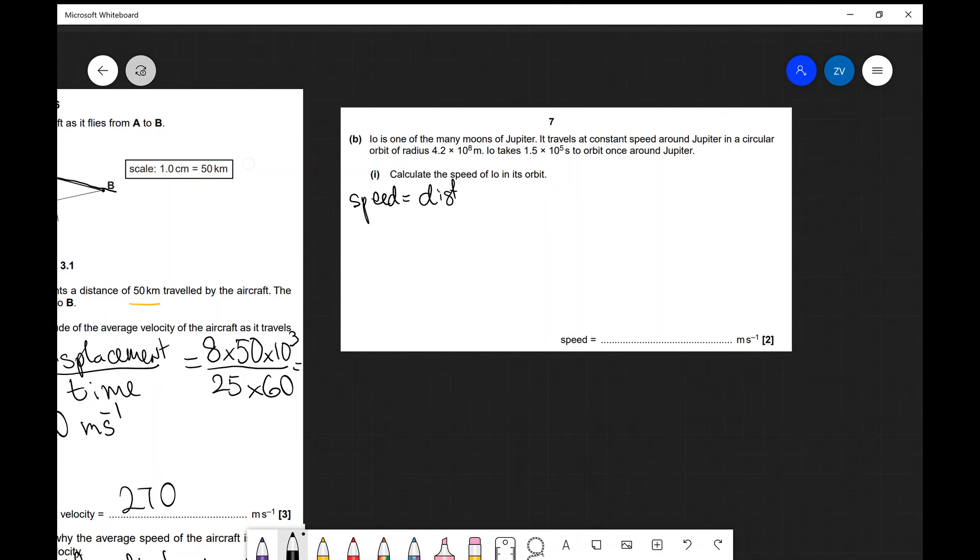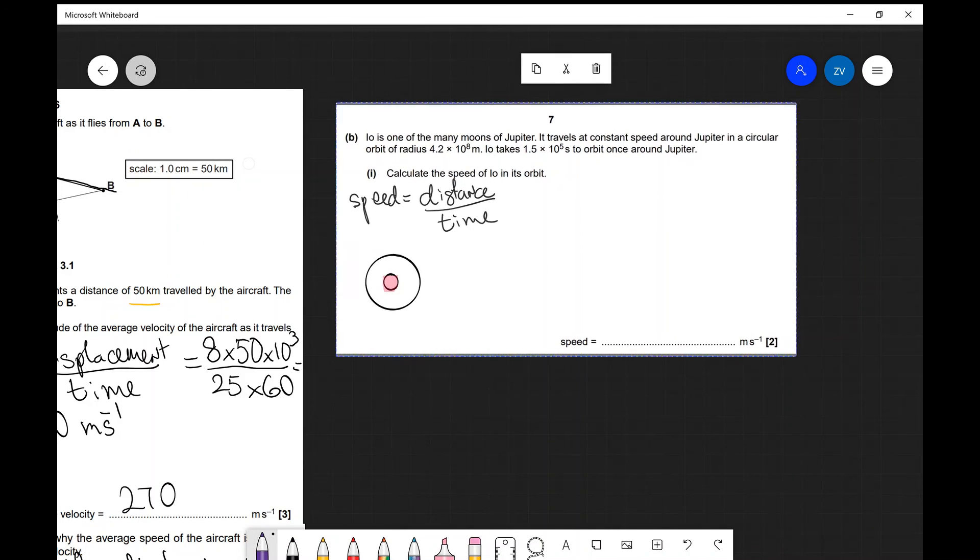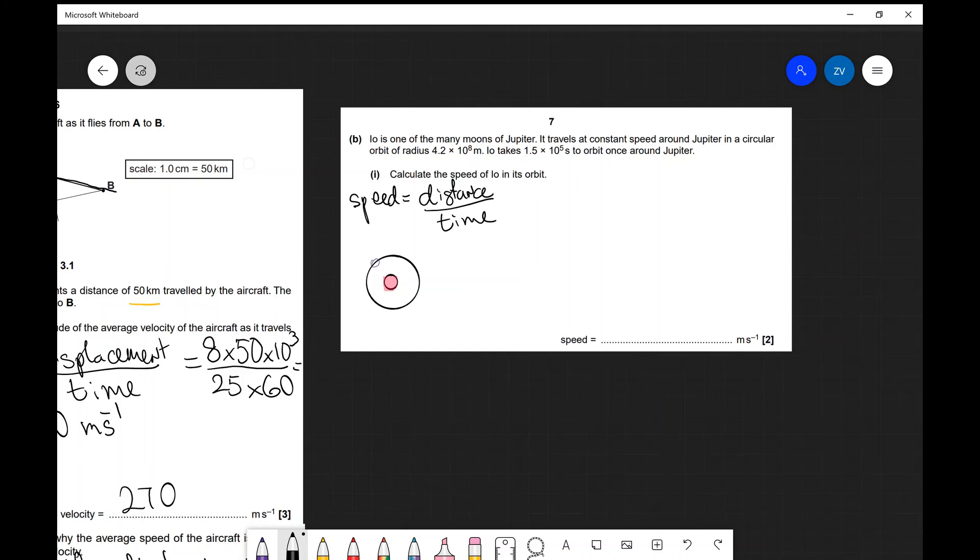Now the speed is—so speed will be the distance traveled divided by the time. Now because Io is moving in a circle around Jupiter so let's say that this is Jupiter in the middle over here and we have Io orbiting around here the radius of this circle is r which means that one full circle that's going to give us 2πr so the total distance traveled is just the circumference of that circle which is 2πr divided by the time.